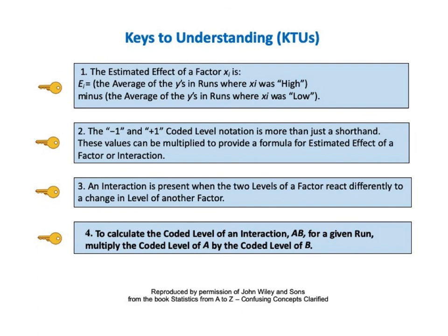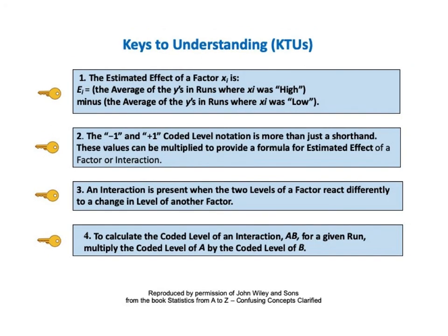The fourth and final key to understanding for this video says, To calculate the coded level of an interaction AB for a given run, multiply the coded level of A by the coded level of B. And here on one page are the four keys to understanding for DOE part 2. You may wish to pause the video at this point and read them all together.